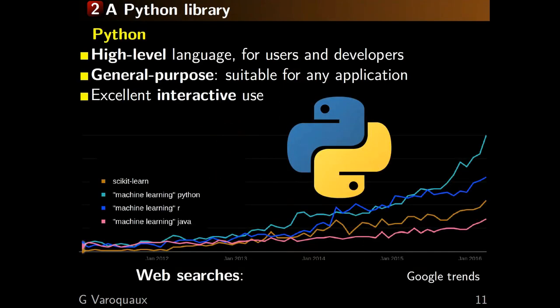We chose to use Python. One reason is that it is a high-level language, which is important for both users and developers. Another reason is that it's general purpose — R is very focused toward statistics, Matlab toward numerics, but Python is general: you can do text processing and numerics in it. What you see here is the growth of Google searches for 'machine learning in Python' versus 'machine learning in R' — Python is overtaking R, while Java is completely failing. Scikit-learn is following that growth quite well, so I think that was a good choice.